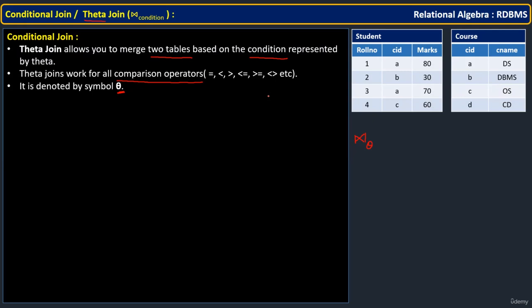The query asks: display the roll number and course name of each student — that is, which course student one took, which course student two took, and so on. To get those, we have to combine these two relations, and to combine them we need to use the course ID attribute.